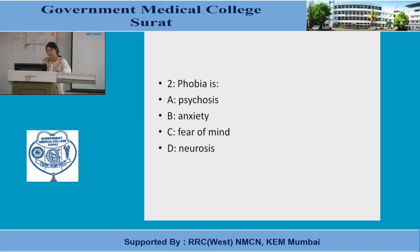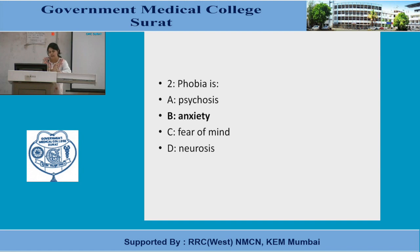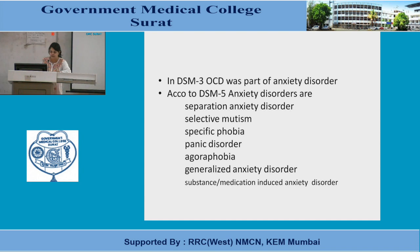The next question: what is phobia? A, psychosis. B, anxiety. C, fear of mind. D, neurosis. The most appropriate answer is anxiety, because phobia is classified under anxiety disorders in DSM-5. Neurosis could also be an answer since reality testing is intact in phobia, but anxiety is the better option when available.